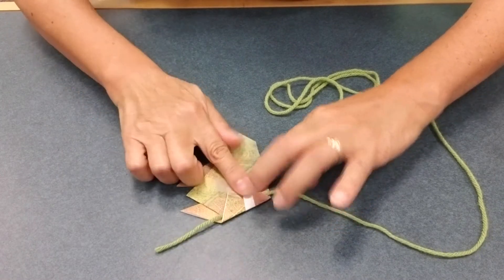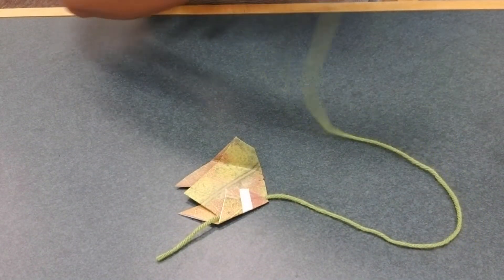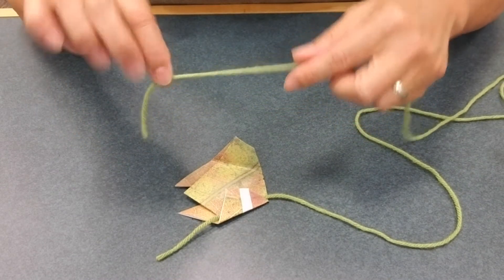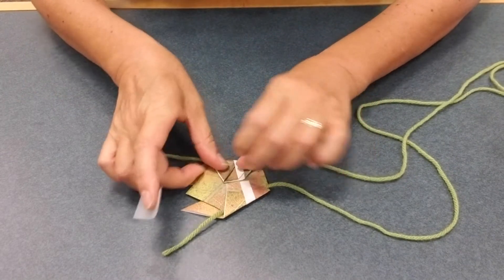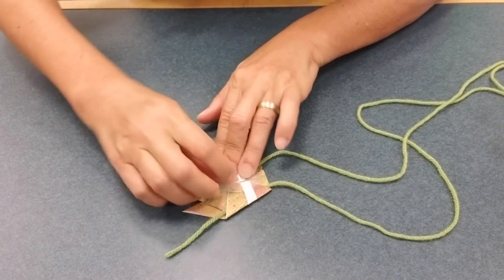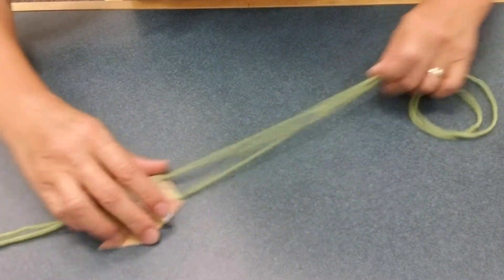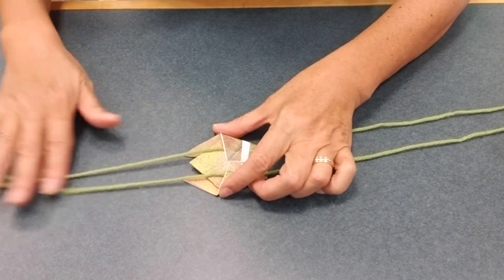Okay, so tape that down. And then with the other end of the string, put that under this flap. And then tape that flap down. Okay, so your string should be able to move easily.